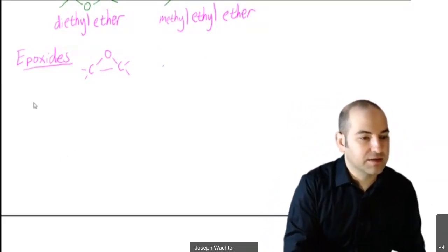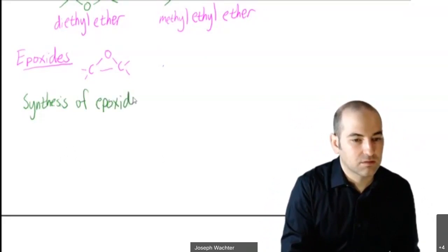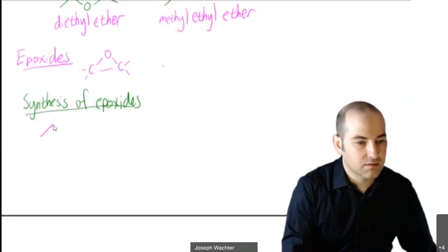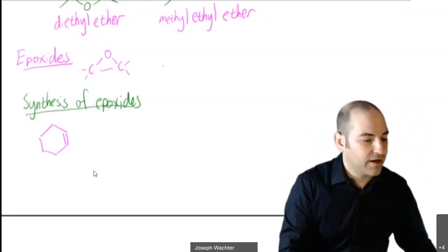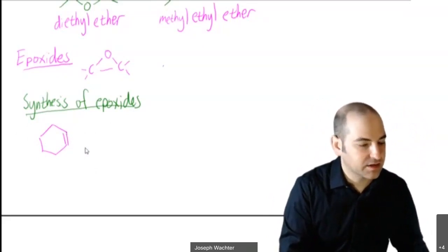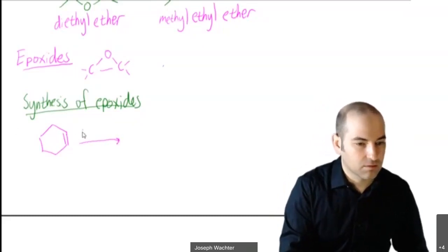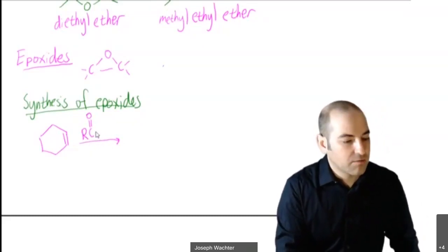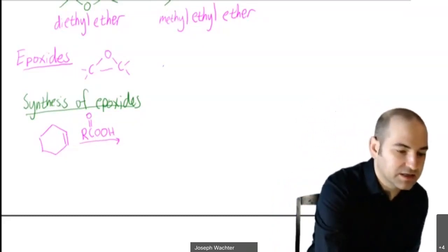Epoxides are made from alkenes. You take an alkene as a starting material — which is good because we know ways to make alkenes — and then react it with something called a peracid or peroxyacid, which is basically a carboxylic acid with an extra oxygen in it. That makes it highly oxidizing and able to form the epoxide. The book doesn't really go into the mechanism of how it's formed, but I can show you if you're interested.